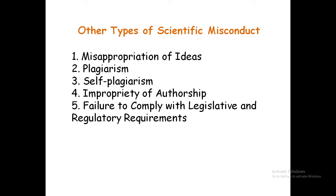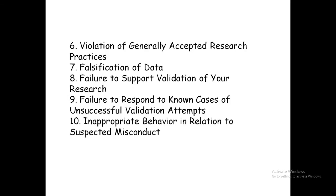Other types of scientific misconduct are as follows: Number 1, misappropriation of ideas; Number 2, plagiarism; Number 3, self-plagiarism; Number 4, improper attribution of authorship; Number 5, failure to comply with legislative and regulatory requirements; Number 6, violation of generally accepted research practice; Number 7, falsification of data; Number 8, failure to support validation of your research; Number 9, failure to respond to known cases of unsuccessful validation attempts; Number 10, inappropriate behavior in relation to suspected misconduct.